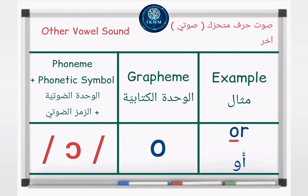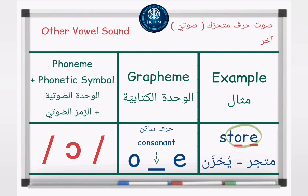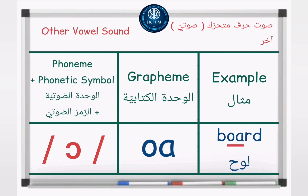Grapheme — letter O, example: 'or' /ɔː/. Grapheme — O consonant E, example: 'store' /ɔː/. Grapheme — letters OA, example: 'board' /ɔː/. Grapheme — letters OO, example: 'door' /ɔː/.